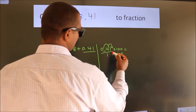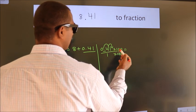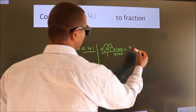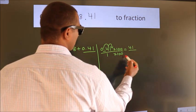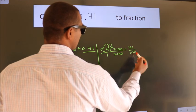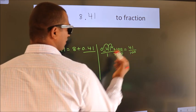Next, 0.41 times 100 equals 41, and 1 times 100 equals 100. This is the fraction we got: 41 by 100.